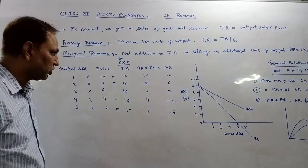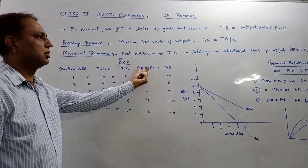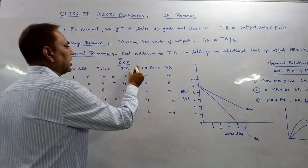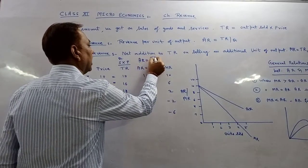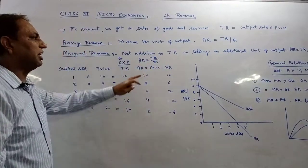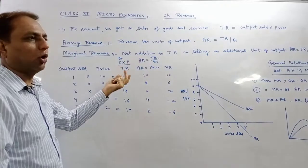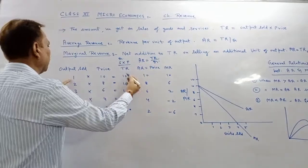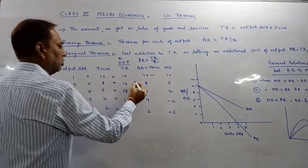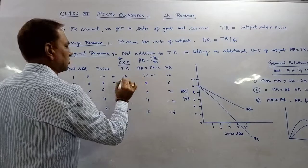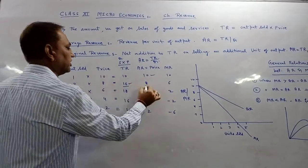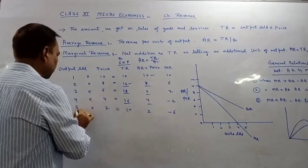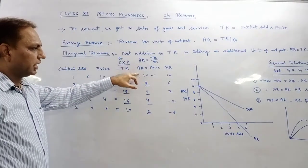Then we calculate AR. One important point: AR is price. Why? Because you multiplied by price to get TR, and now you divide by the same quantity — using the formula AR equals TR divided by quantity — so it automatically gives back the price. So: 10÷1=10, 16÷2=8, 18÷3=6, 16÷4=4, 10÷5=2. These are the AR — average values.